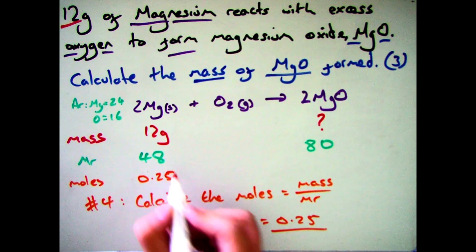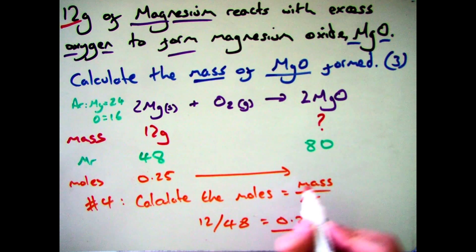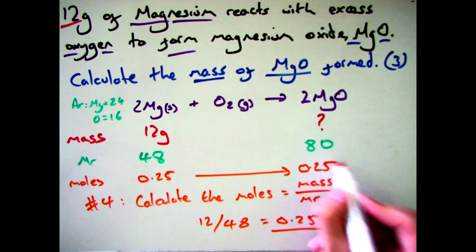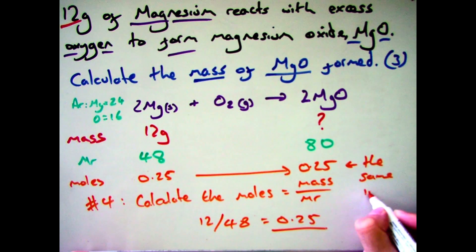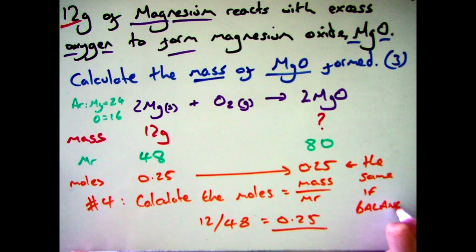What you need to remember is the moles as long as you have a balanced equation is the same on both sides. So if you have 0.25 moles of magnesium you have 0.25 moles of magnesium oxide as long as the equation is balanced.